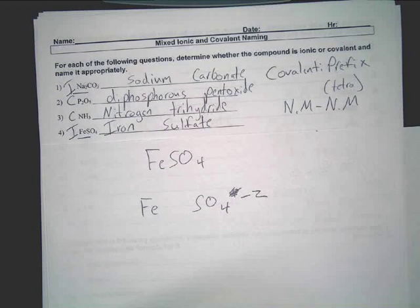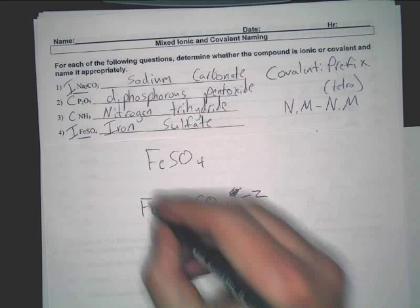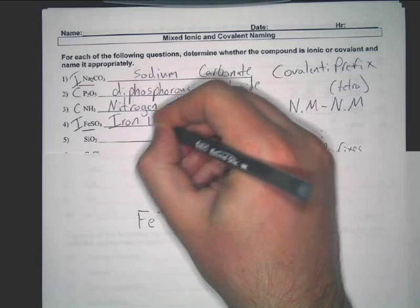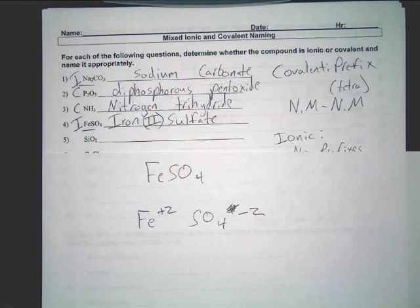So, if sulfate is negative two, we only have one iron. What must the charge be? Plus two. It has to be plus two to cancel out, neutralize, add up to zero.